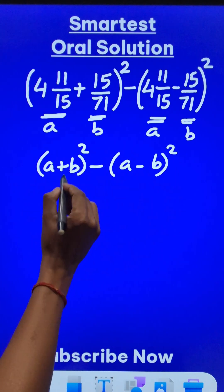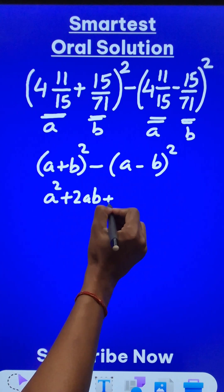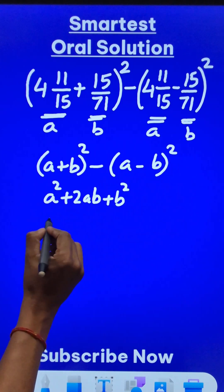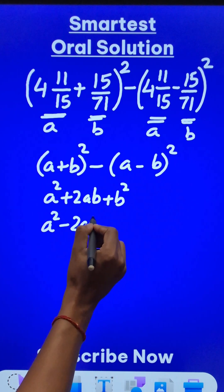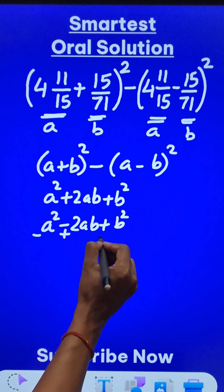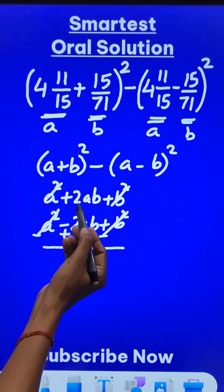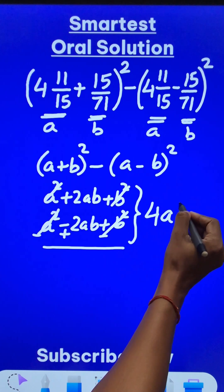Now, if you know a plus b whole square is actually a square plus 2ab plus b square. And when we subtract a minus b whole square, which is a square minus 2ab plus b square, the signs are going to change. So negative, positive and negative. And this term and this term gets cancelled giving you 2ab plus 2ab as 4ab.